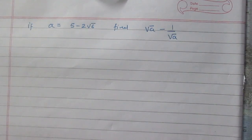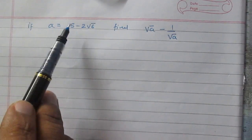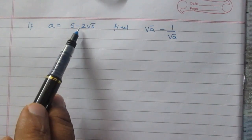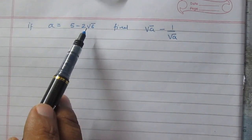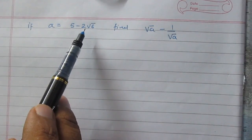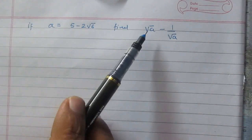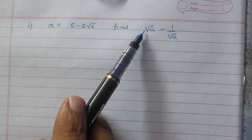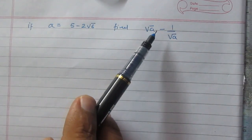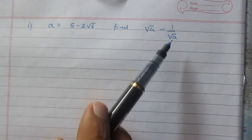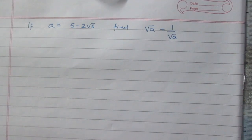We are given that the value of a is equal to 5 minus twice of square root 6, and we are to find square root of a minus 1 upon square root a.